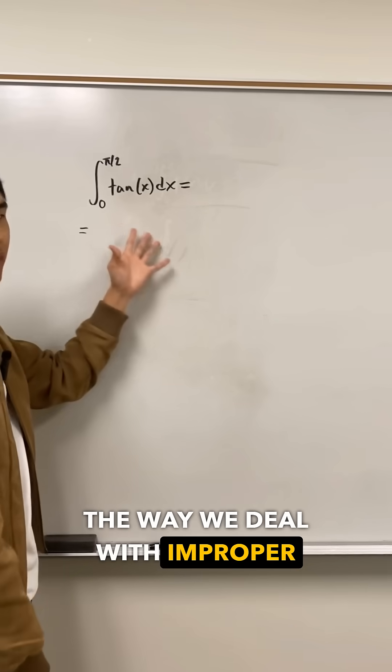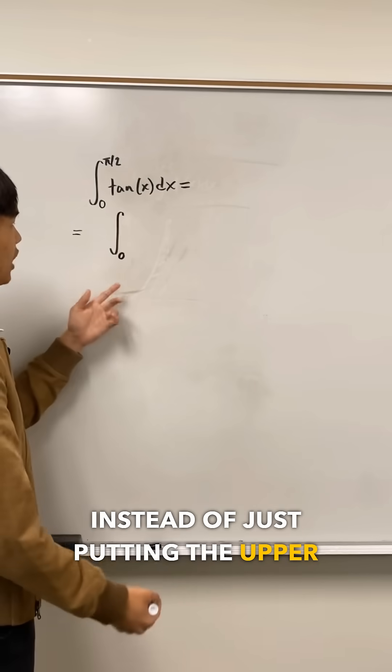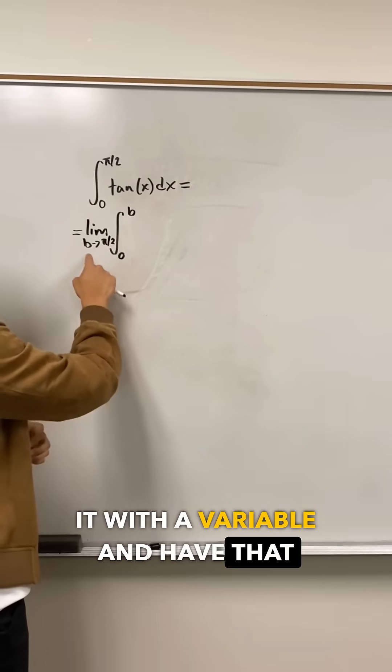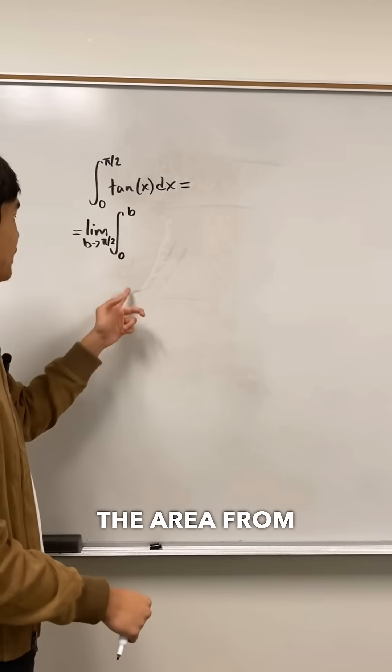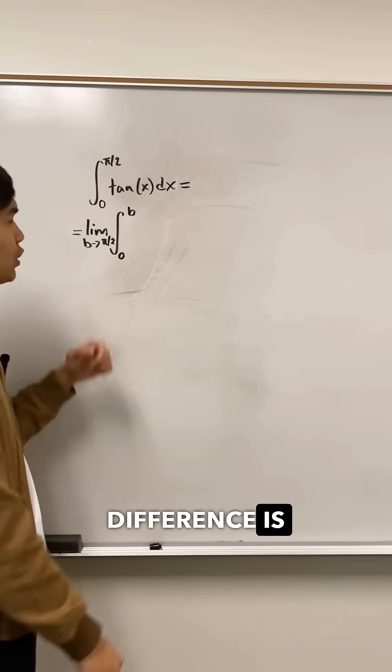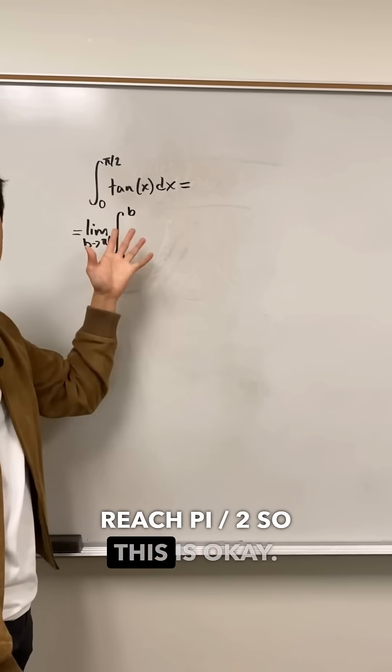The way we deal with improper integrals is pretty simple. Instead of just putting the upper bound, I'm going to replace it with a variable and have that variable approach pi over 2. So this still lets us accumulate the area from 0 to pi over 2, but the difference is we never actually reach pi over 2, so this is okay.